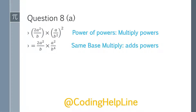Now we will multiply the same terms and add the powers. So it becomes 2a, power 2 from here plus power 2 from here, added up. And b power 1 and b power 4, add them up. After simplification, we will have 2a⁴ and b⁵. That is the answer for question 8a.